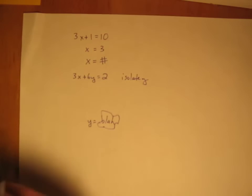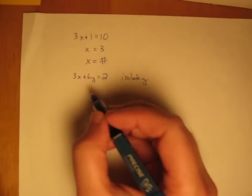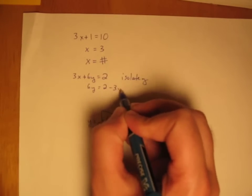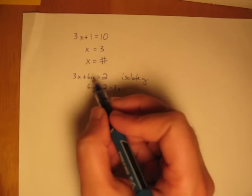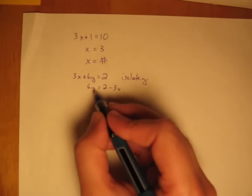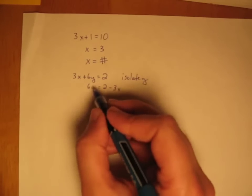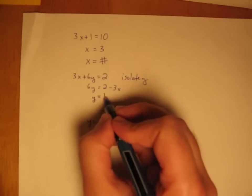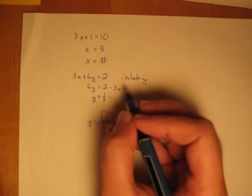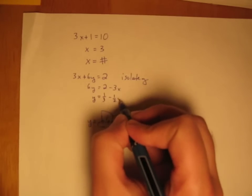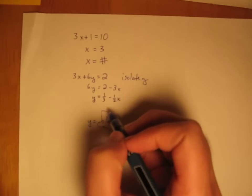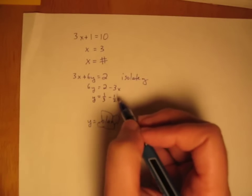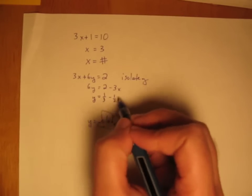So we're going to move everything that's not y off to the other side of the equal sign. So we get 6y equals 2 minus 3x after subtracting 3x from both sides. And then to finally, the final step that we need to do is divide by 6 so that we get 2 sixths or 1 third minus 3 sixths or 1 half x. And now we have y in terms of numbers and x's, a whole bunch of stuff.